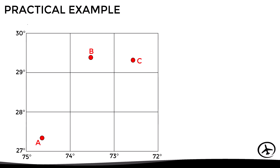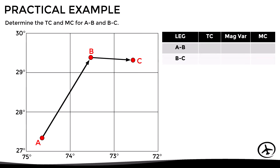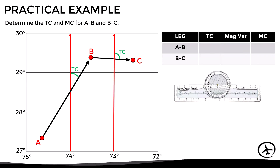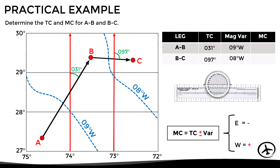Let's see a practical example using a navigation chart. We want to determine the true and magnetic course from A to B and from B to C. Using a plotter we measure a true course of 31 degrees from A to B and 97 degrees from B to C. To determine the magnetic course we look at the closest isogonic lines — from A to B we assume a magnetic variation of 9 degrees west, and from B to C we assume 8 degrees west. Since west is best we add, obtaining a magnetic course of 40 degrees from A to B and 105 degrees from B to C. With this we have covered the definitions of true course and magnetic course.